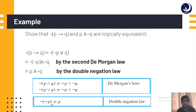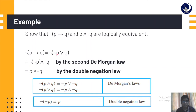Now observe there is a double negation: 'not of not p'. We apply the double negation law — not of not p is equivalent to p — giving us p and not q. We solved this problem in just three steps using two laws, whereas deriving truth tables would take much longer.